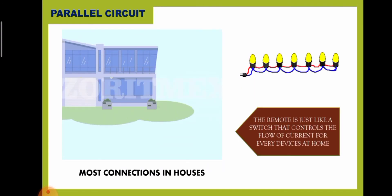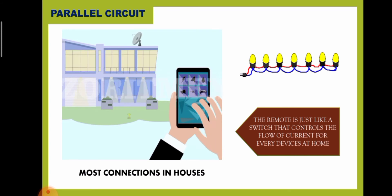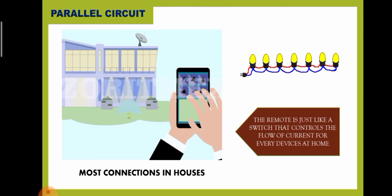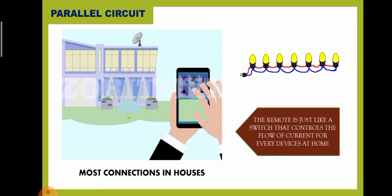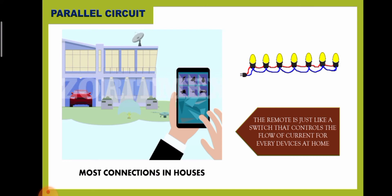Most connections in our houses are in parallel circuit, and it runs like that of the illustration. The remote is just like a switch that controls the flow of current for every device at home. It is for easier use because it allows the flow of electricity to select the devices that you would want to use.